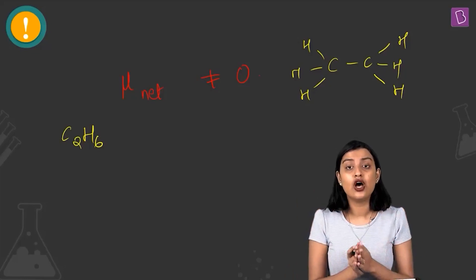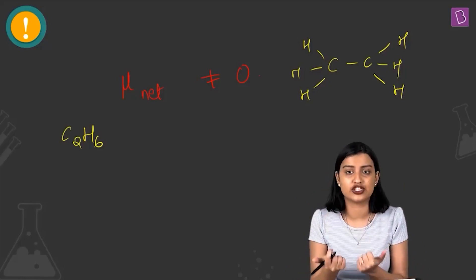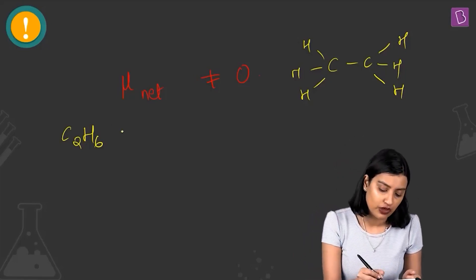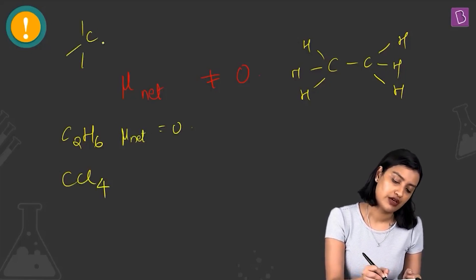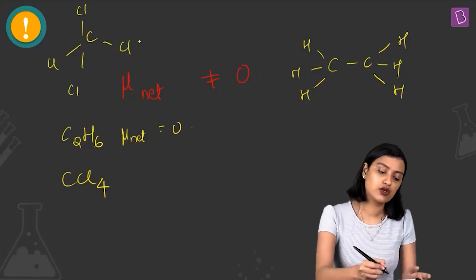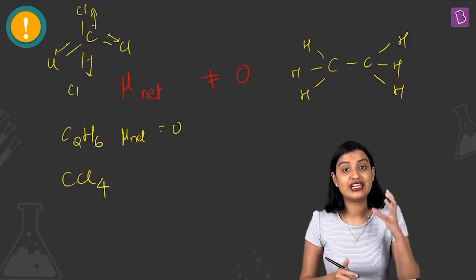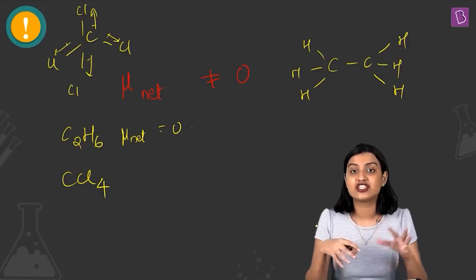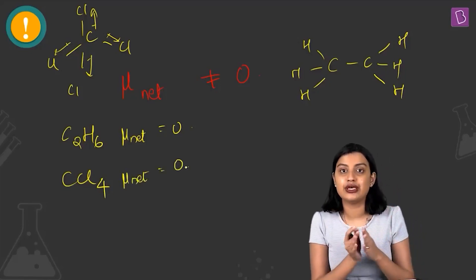For CCl4, it has a tetrahedral structure. Chlorine is more electronegative and pulls the bond pair towards it for all four C–Cl bonds. However, when you perform vector addition accounting for the bond angles, the net dipole moment cancels out: μ_net = 0. CCl4 has polar bonds but is overall non-polar.